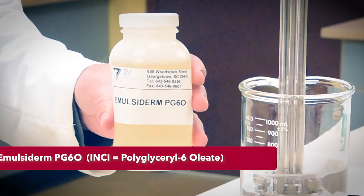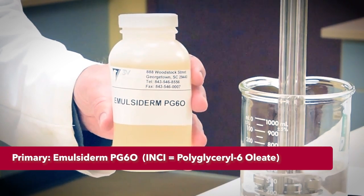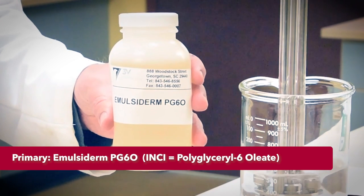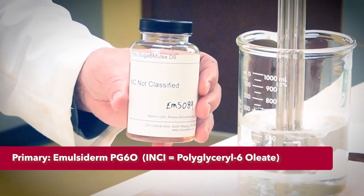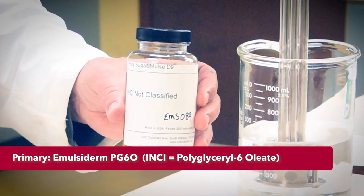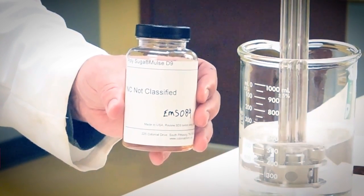Next we'll be adding our primary and secondary emulsifiers, both having high natural origin content. Primary being emulsaderm PG60, polyglycerol 6-oleate. The secondary being polysigamose D9, a natural origin surfactant based on polyglucoside chemistry.